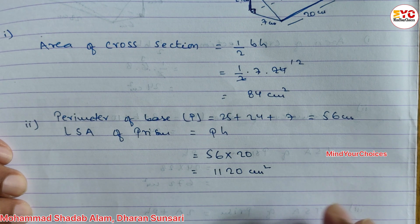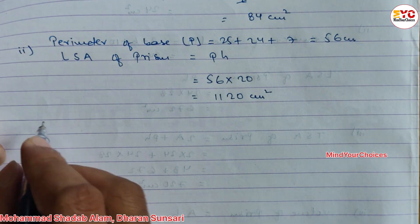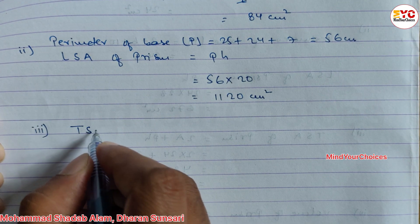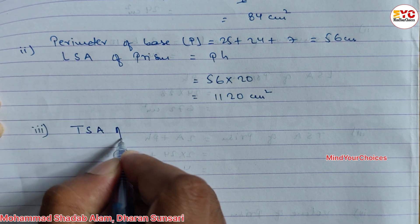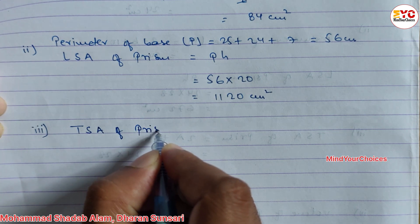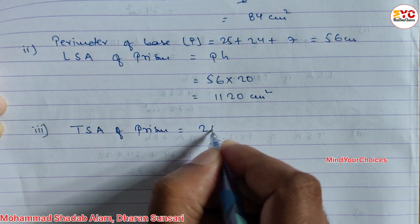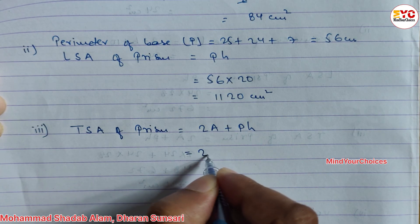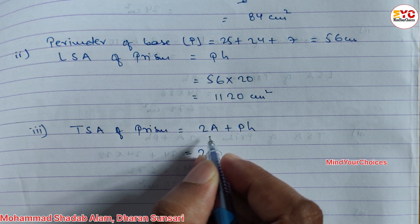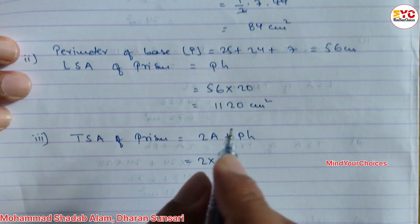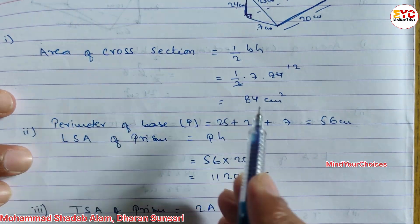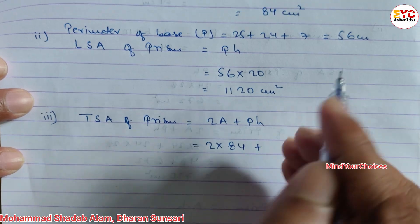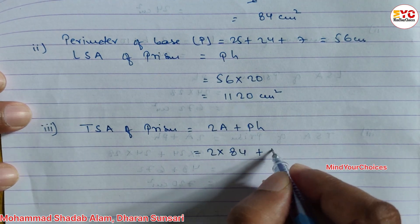Now we have to find out the total surface area. TSA of prism — what is the formula? 2A plus PH. So 2 into A — A means area of cross-section which is 84. So write 84. Plus P, perimeter of base, which is 56. Into height.